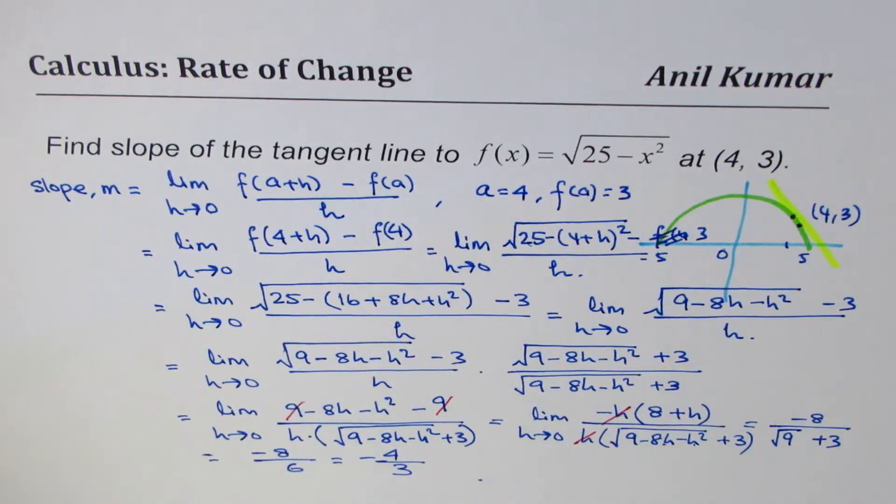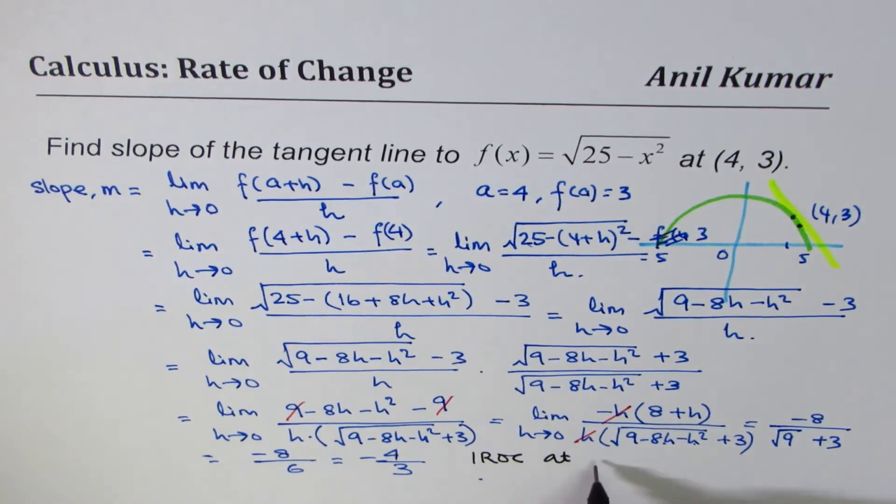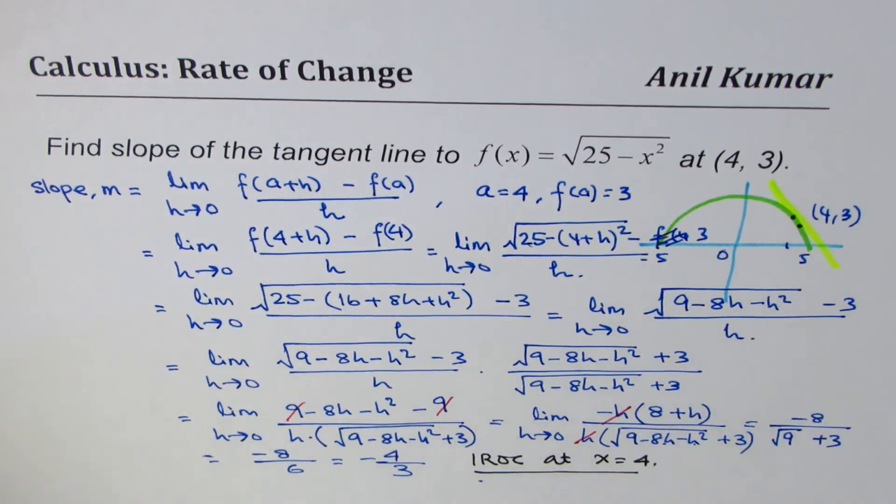So that is how, using difference quotient, we can find the slope. You could be asked this question also in a different way. That is to find instantaneous rate of change at x equals to 4, where, again, you just find slope of the tangent line. So we'll discuss the same topic in instantaneous rate of change also, and the solution is kind of similar. I hope that helps. I'm Anil Kumar. Thanks for watching, and all the best.